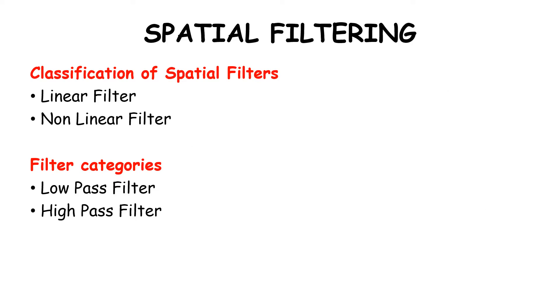When we look into the classification of spatial filters, basically there are two types: linear filters and non-linear filters. The filter categories are low-pass filter and high-pass filter.